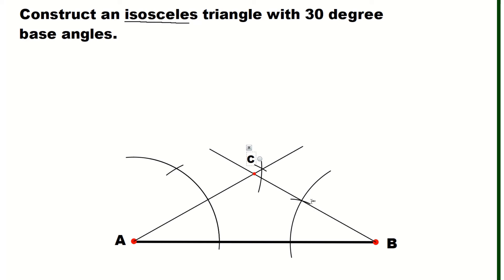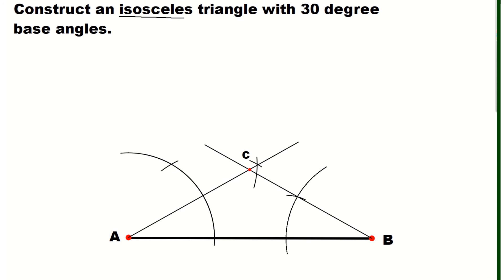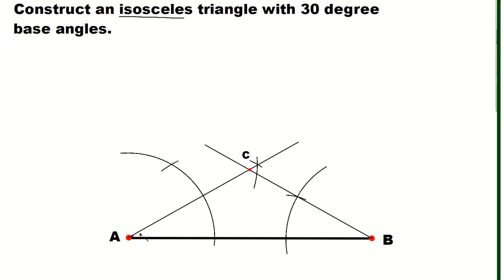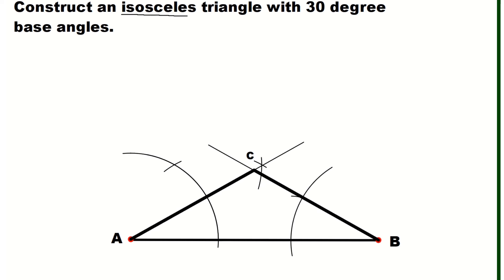Point C is now our third vertex for the triangle. We will draw thicker lines — a straight line connecting A and C, and another straight line connecting B and C. So there we go, we now have an isosceles triangle with base angles equal to 30 degrees.